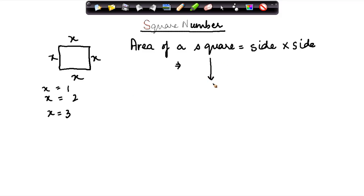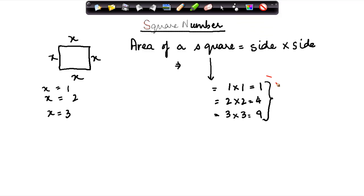Now what will be the area of the square? The area of the square is equal to side into side. So 1 into 1 is equal to 1. Here it will be 2 into 2 is equal to 4. Again in this example 3 into 3 is equal to 9. Now all these numbers which come when we multiplied one number with itself, these are called the square numbers.